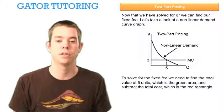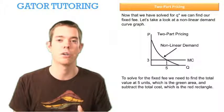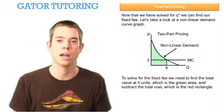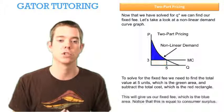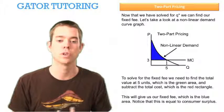We need to solve for the fixed fee by finding the total value at 5 units, or this green area, and then subtracting the total cost, or this red rectangle. When we do that, it's going to leave us with just that blue area, which is our fixed fee.